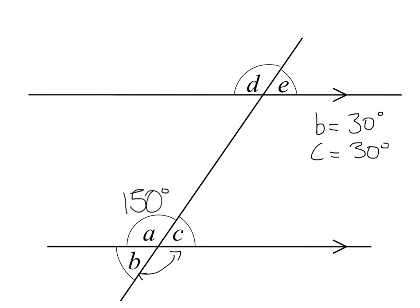C corresponds with E. So E is also going to be worth 30 degrees. So we're not doing it alphabetically. But we can look at D and D corresponds with the angle that we were given in the first place. So D is going to be worth 150 degrees.